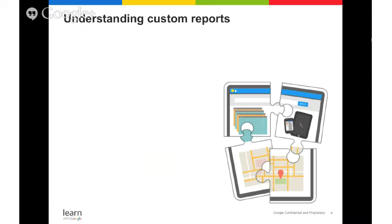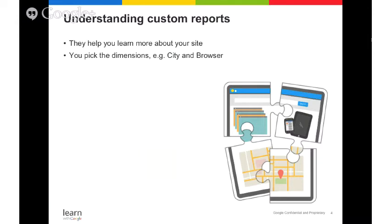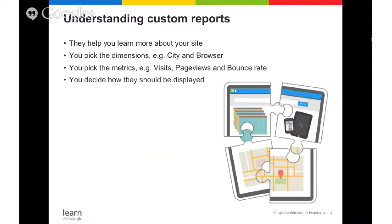A custom report is a report that you create to learn more about your site. You pick the dimensions — city and browser, for example — and metrics such as visits, page views, and bounce rates, and decide how they should be displayed. You can think of custom reports as puzzle pieces: you can pick and choose what you'd like to focus on, and they fit together to become a story, or in this analogy, a picture.